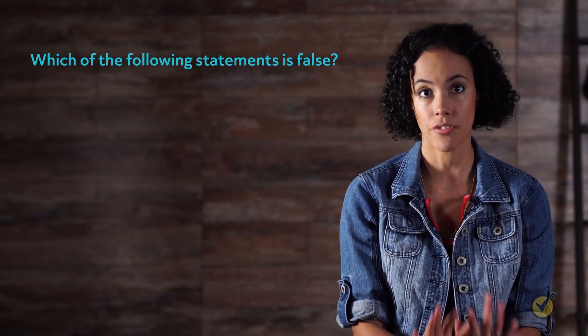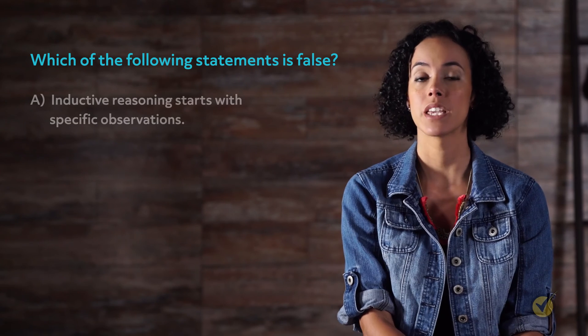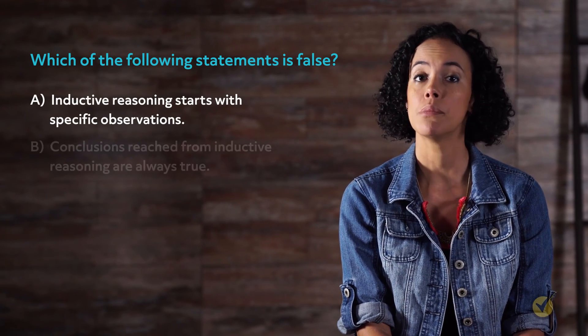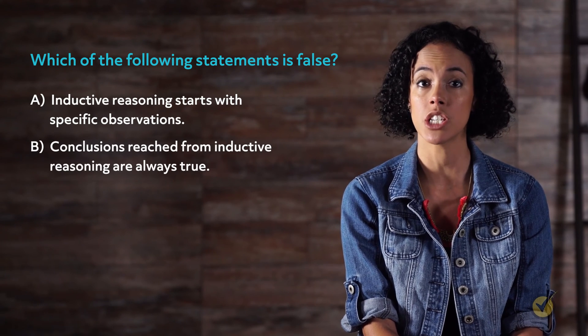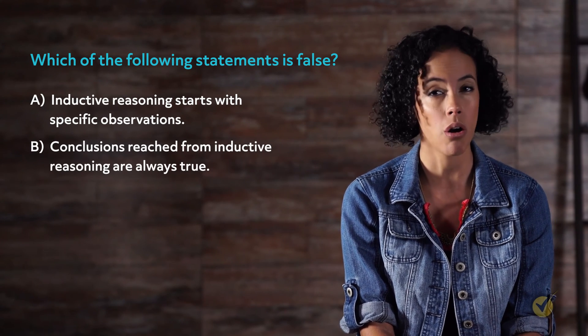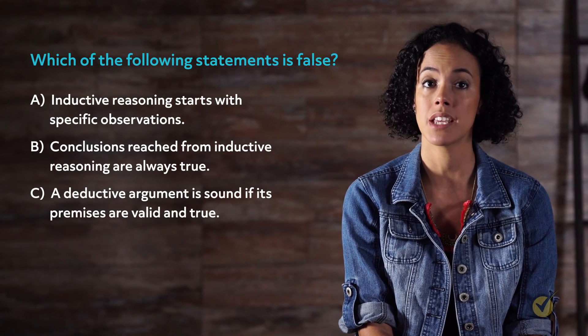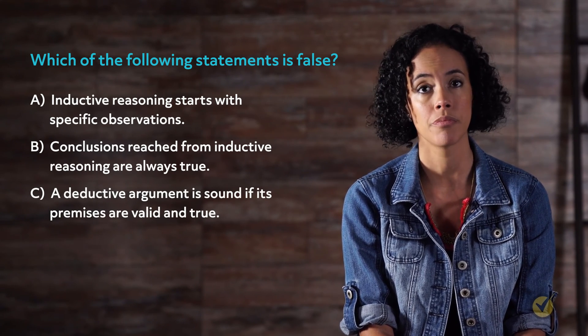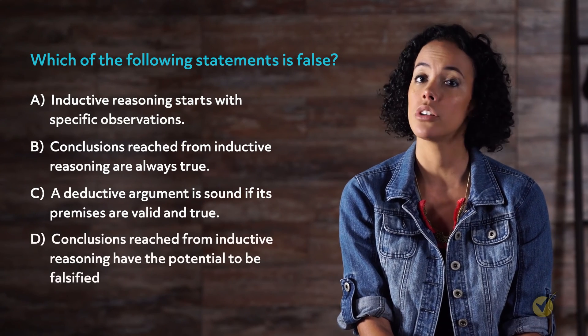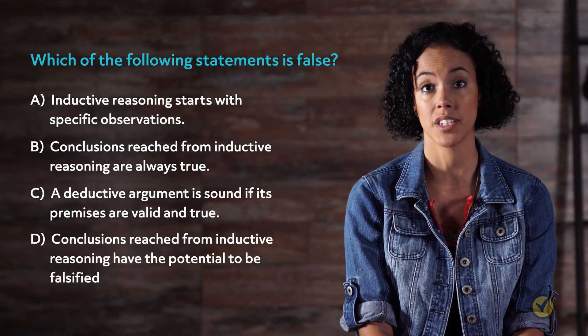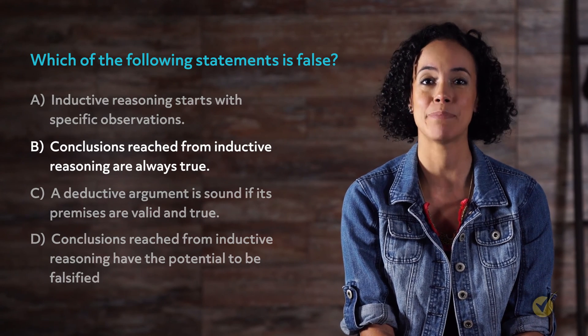Before we go, here's a review question to see what you've learned. Which of the following statements is false? A: Inductive reasoning starts with specific observations. B: Conclusions reached from inductive reasoning are always true. C: A deductive argument is sound if its premises are valid and true. D: Conclusions reached from inductive reasoning have the potential to be falsified. The correct answer is B. Conclusions reached from inductive reasoning are not always true.